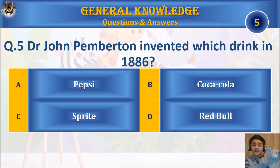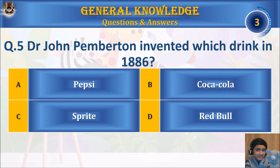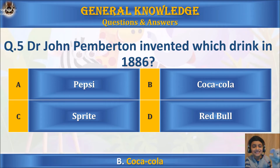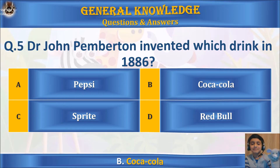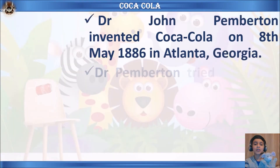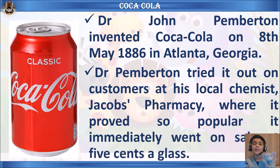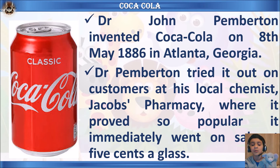Question five: Dr. John Pemberton invented which drink in 1886? A) Pepsi, B) Coca-Cola, C) Sprite, or D) Red Bull? Your time starts. The answer is Coca-Cola. Dr. John Pemberton invented Coca-Cola on the 8th of May, 1886, in Atlanta, Georgia. Dr. Pemberton tried it out on customers at his local chemist, Jacob's Pharmacy, where it proved so popular it immediately went on sale at five cents a glass.